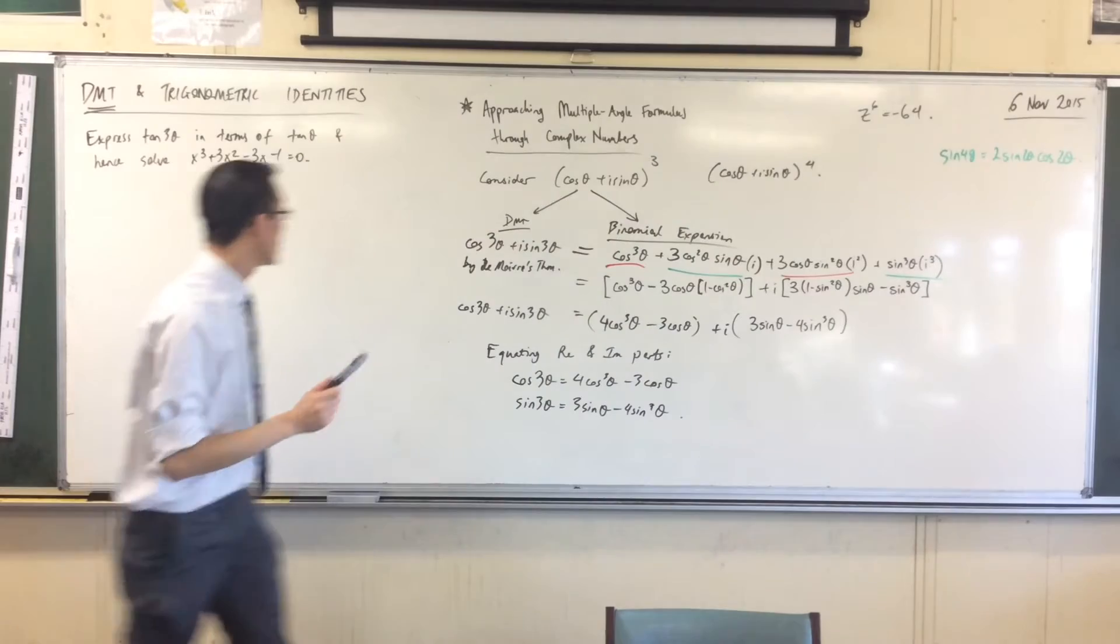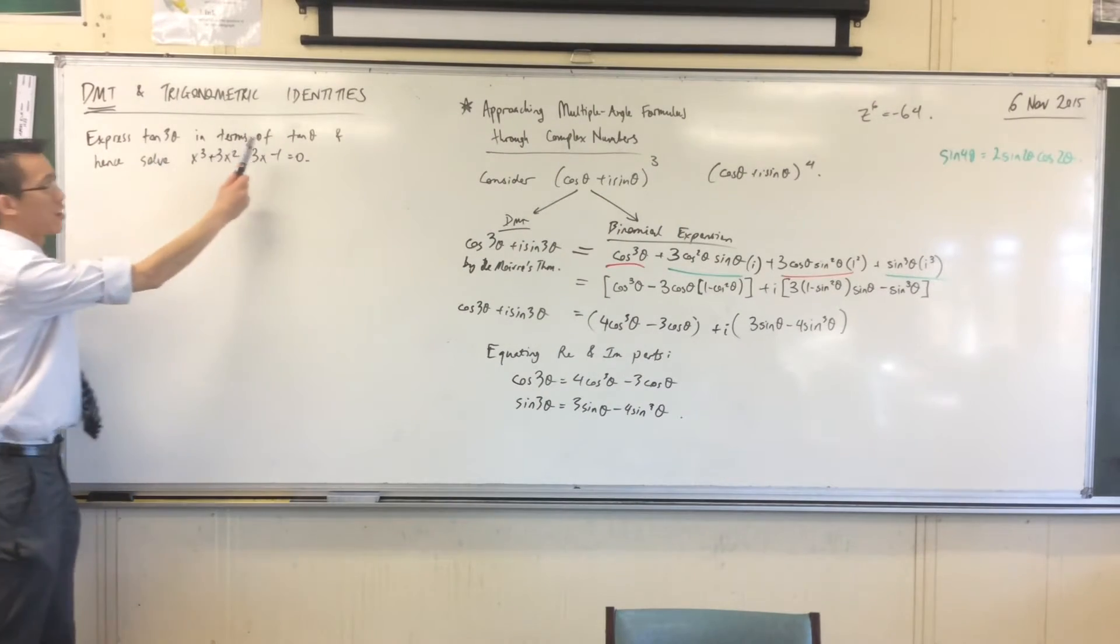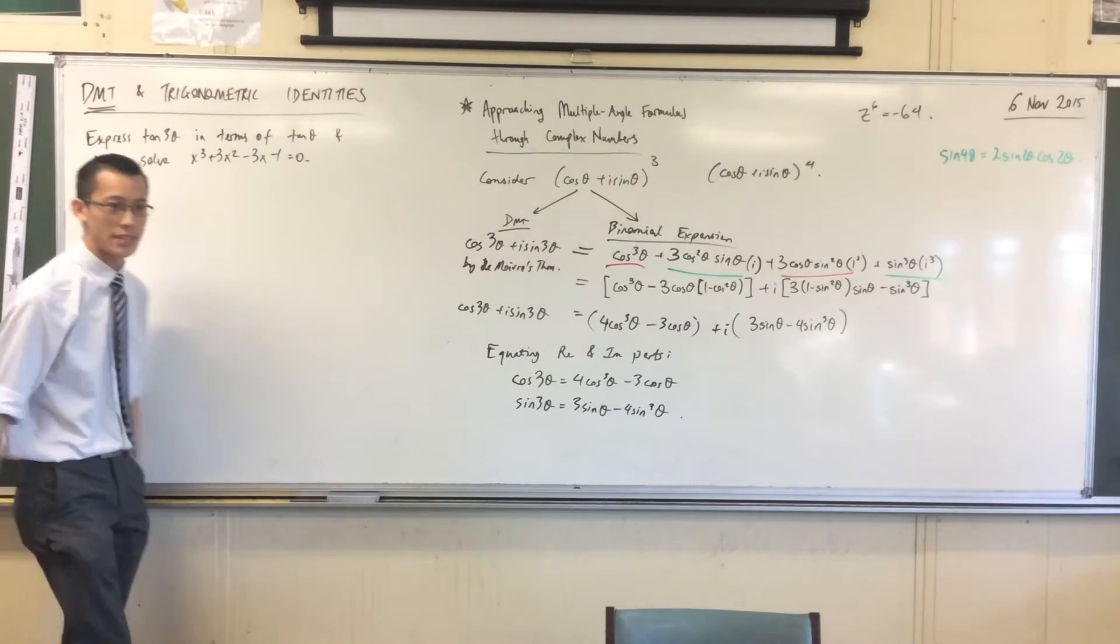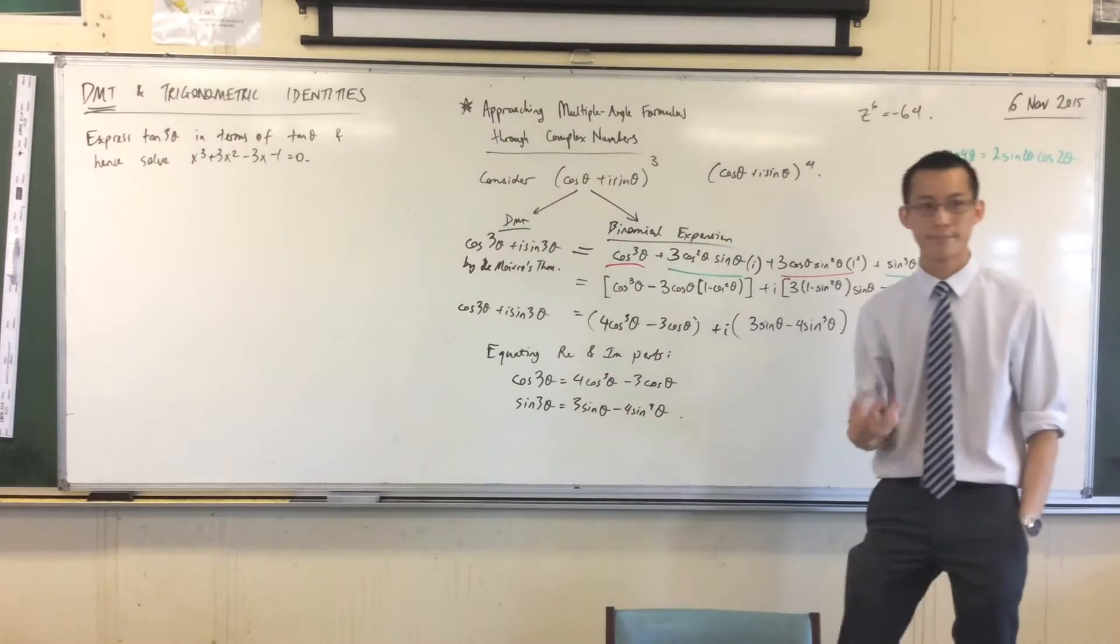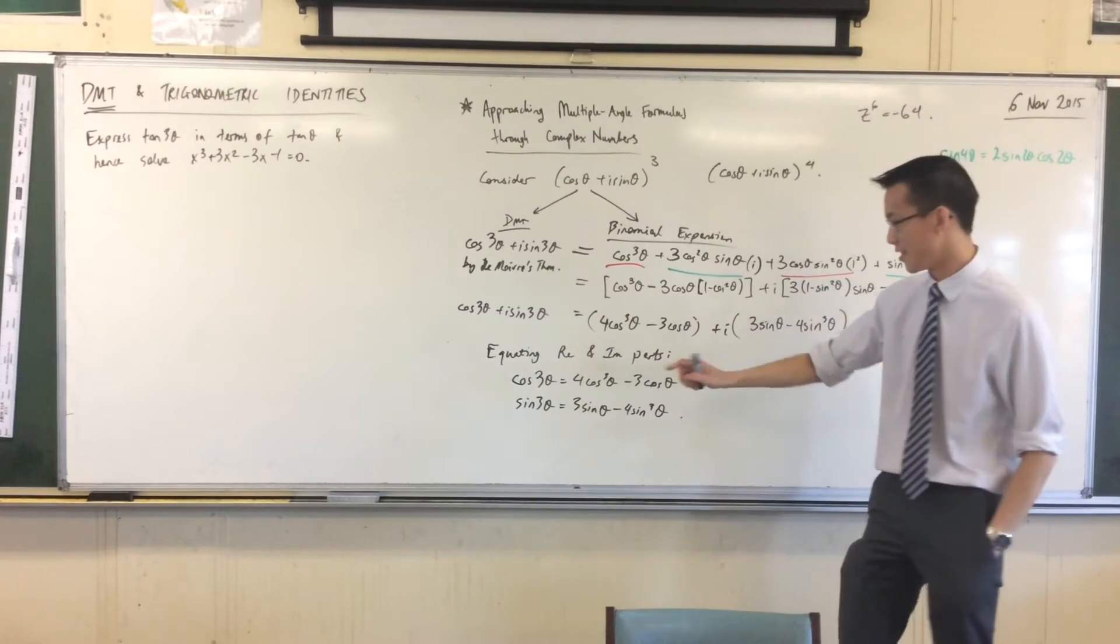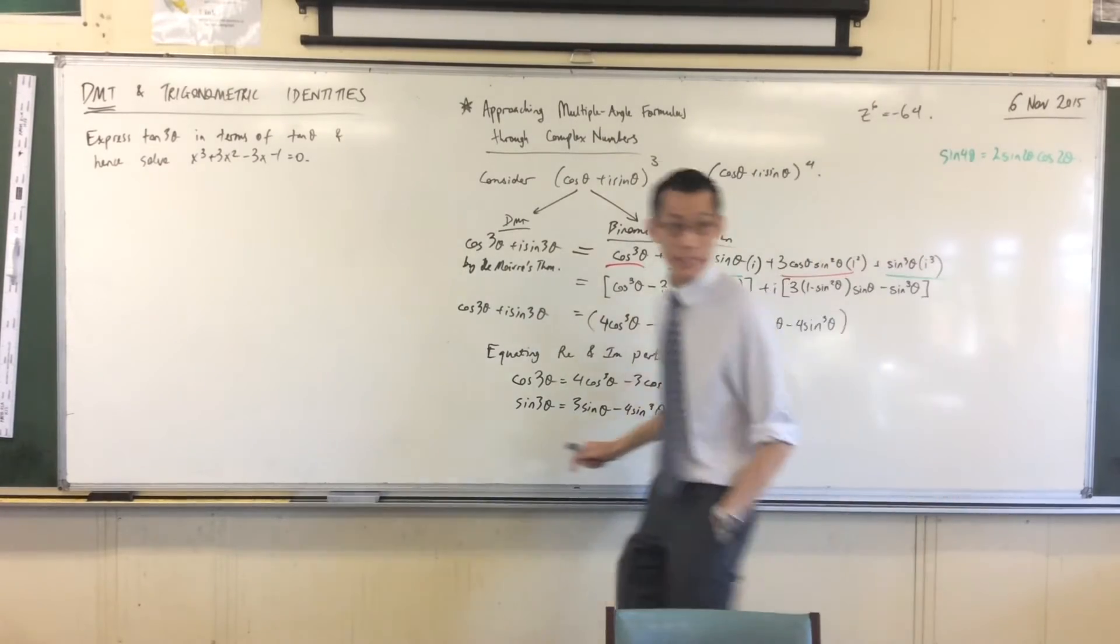Firstly, it says, express tan3θ in terms of tanθ. Now, knowing these two, what would be your first line? Tan3θ is sin3θ on cos3θ. Let's write that down.